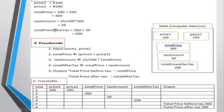To work out the tax amount: tax amount equals 15 percent times total price, which is 15% of what is stored in the total price memory location. Total price after tax means adding total price plus tax amount and storing it in the total price after tax memory location. Remember, this program has to work for any prices entered.